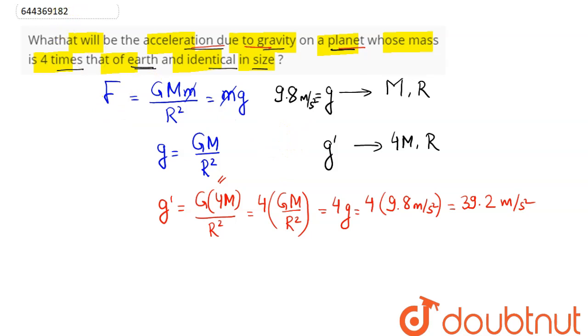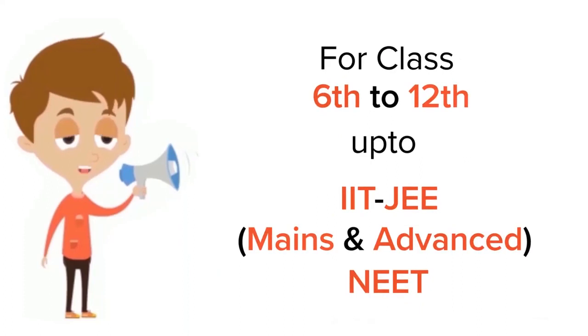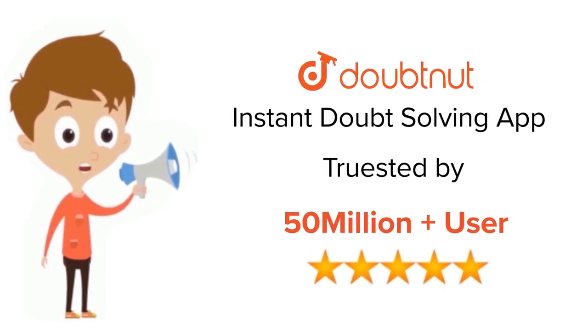Hence, the acceleration due to gravity on a planet whose mass is four times that of Earth and identical in size is 39.2 m/s², which is our answer. For class 6–12, IIT JEE, and NEET level — trusted by more than 5 crore students.